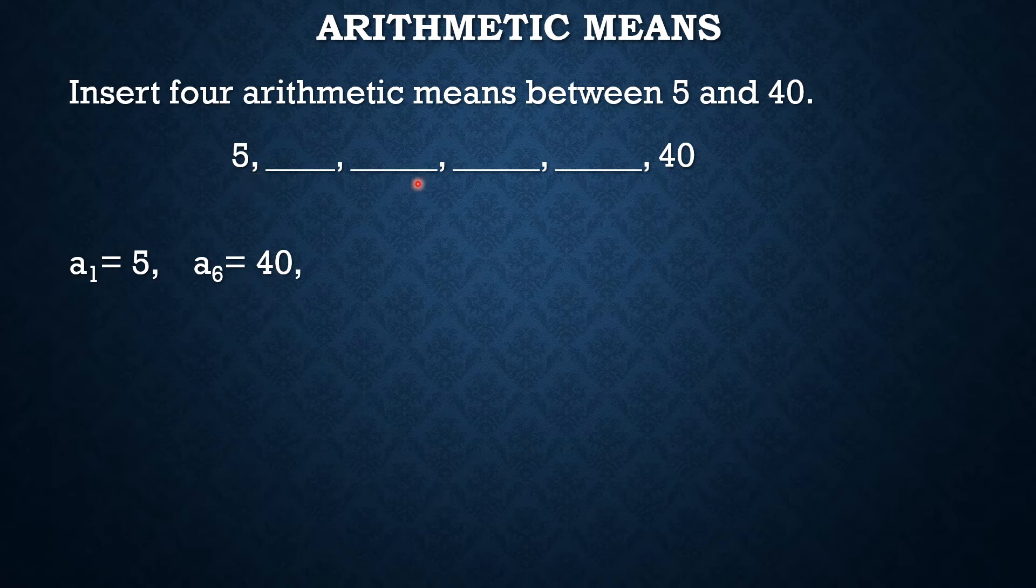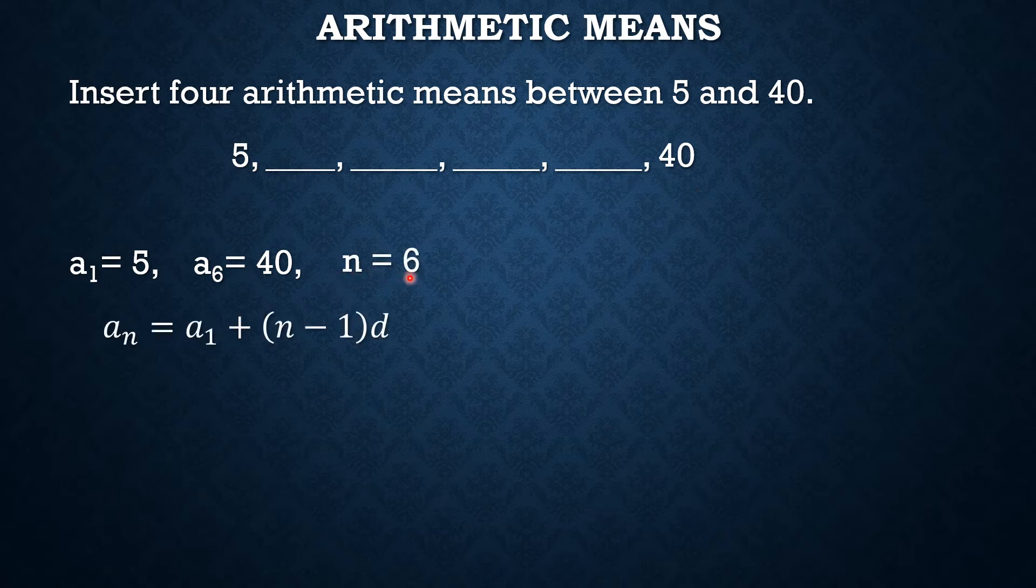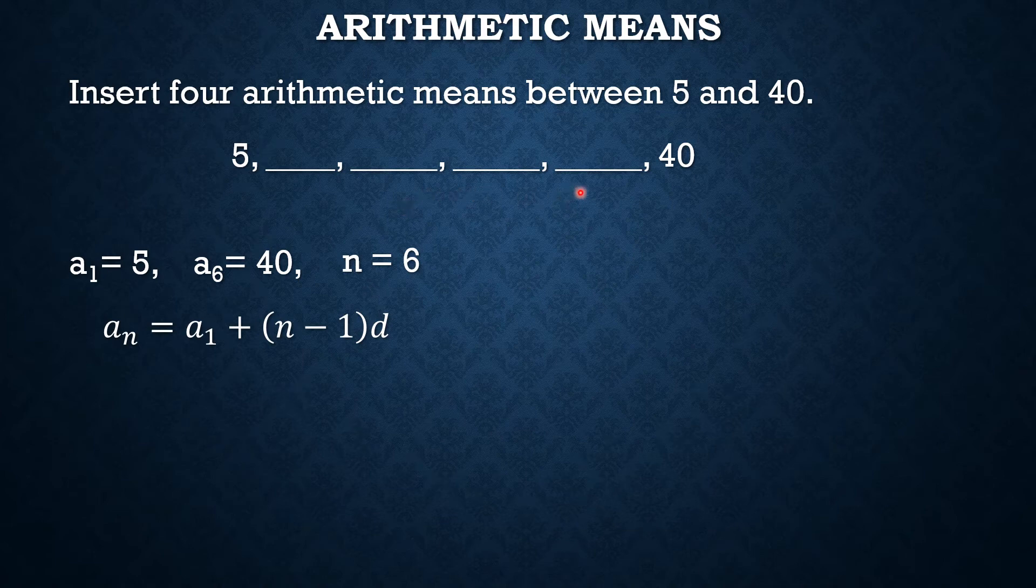Since meron tayong 6 na terms sa sequence, the value of n is 6. By using the formula, a sub n is equal to a sub 1 plus n minus 1 times the common difference, we can be able to calculate the common difference para mailagay natin yung mga missing terms.